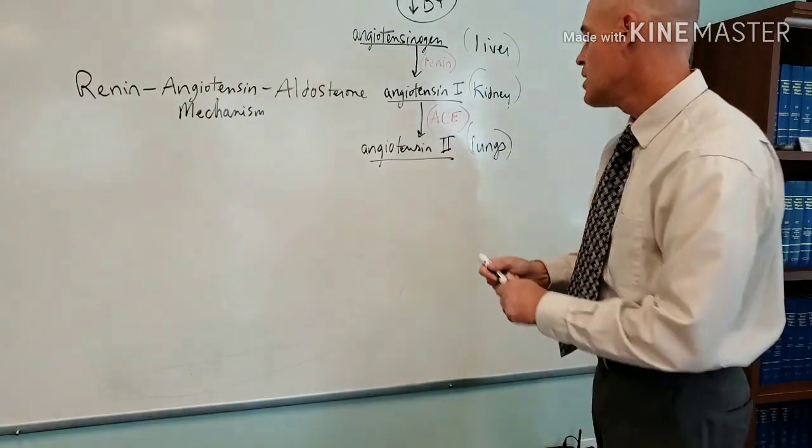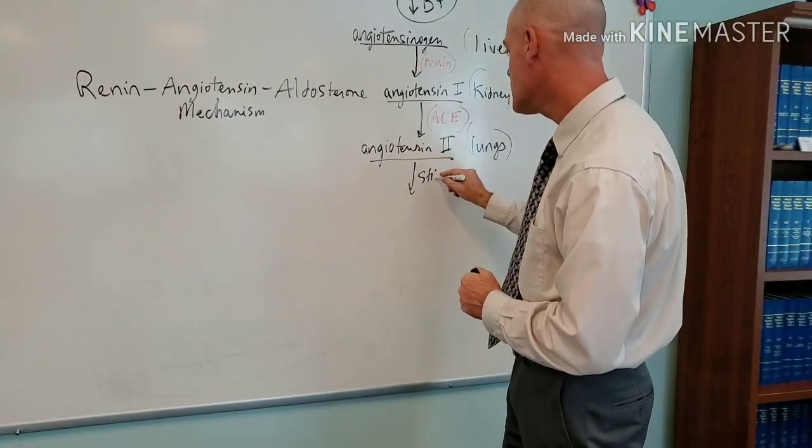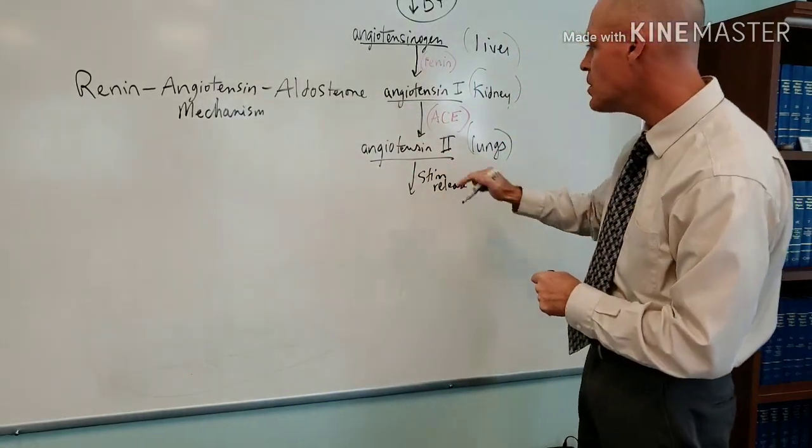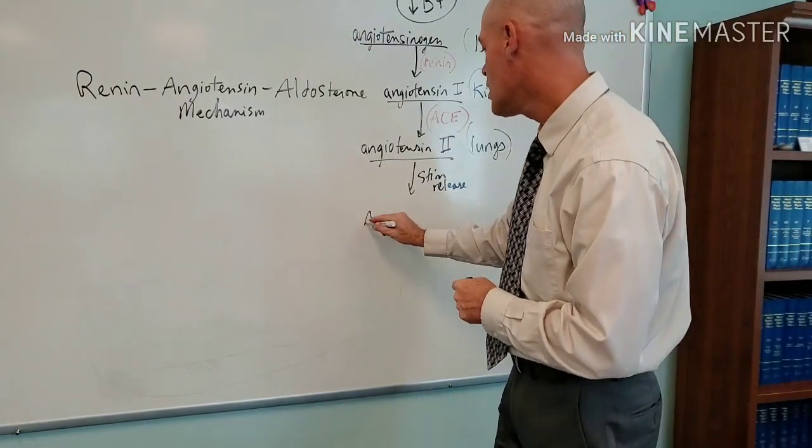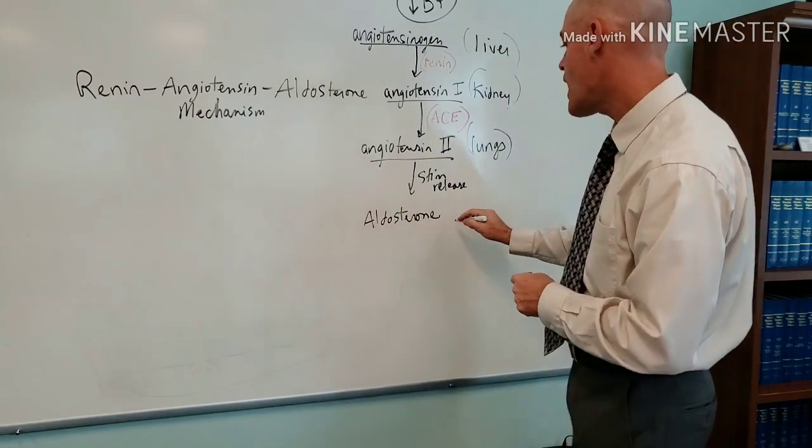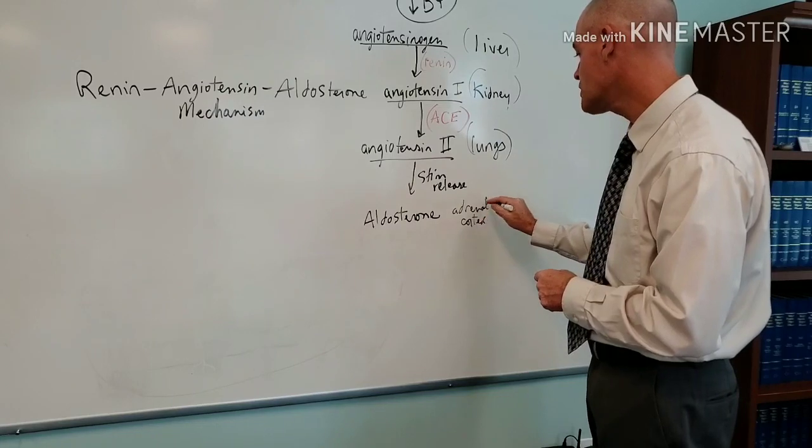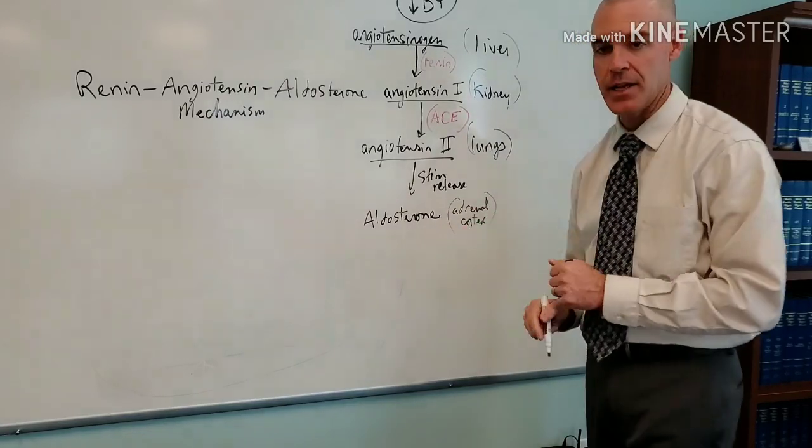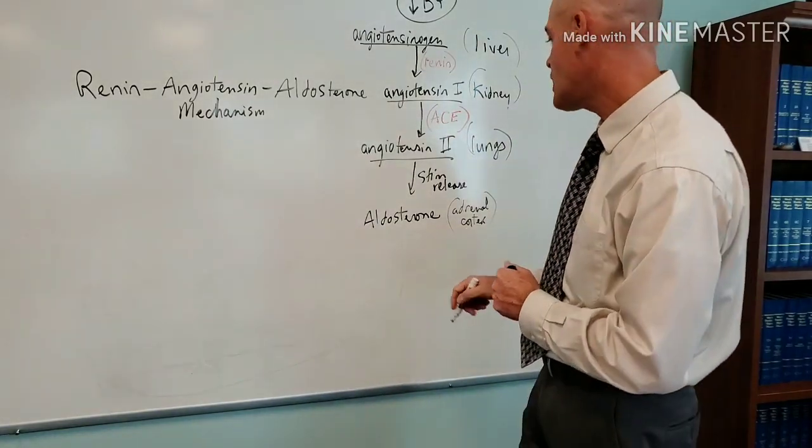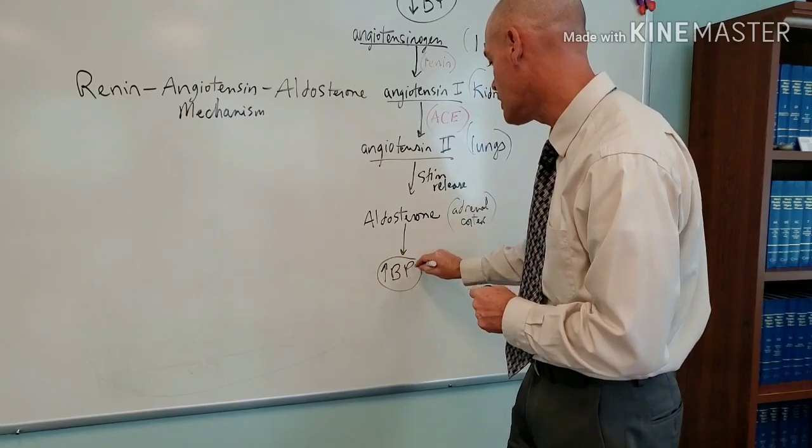Angiotensin-2 is going to then stimulate the release—it's not another conversion now—it's stimulating the release of aldosterone, which happens to be, in case you want to know where aldosterone is located, it's located in the adrenal cortex in the adrenal glands. And what's happening is aldosterone is going to trigger a rise in blood pressure.